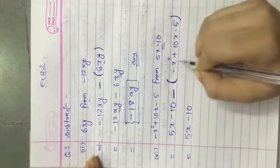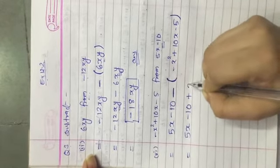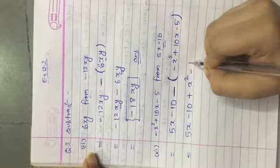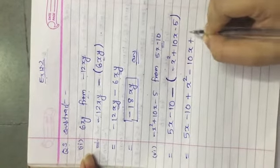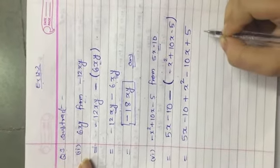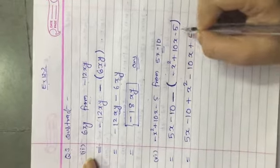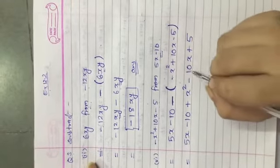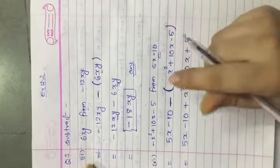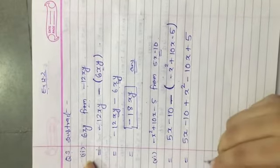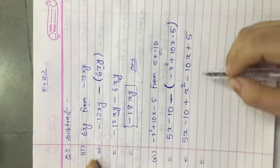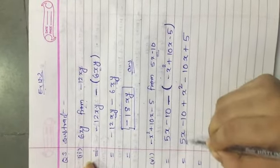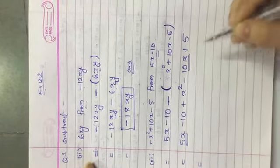Minus will become plus and plus will become minus. So first it is minus, so it becomes plus after opening the bracket. Plus becomes minus, and minus becomes plus. So now we will simplify the expression.